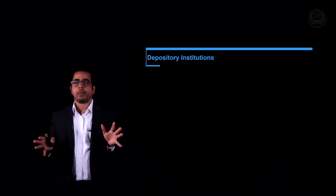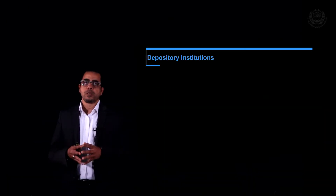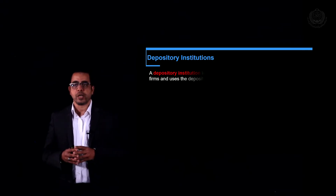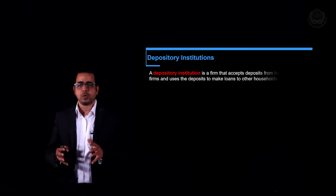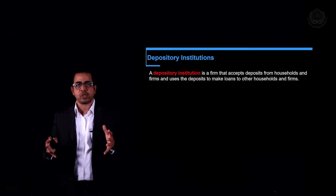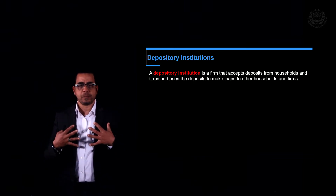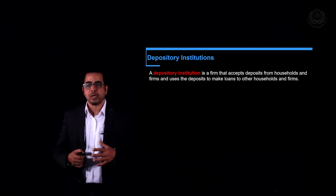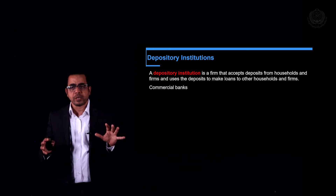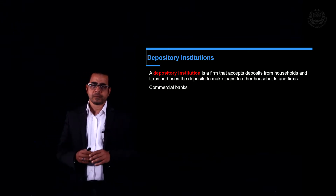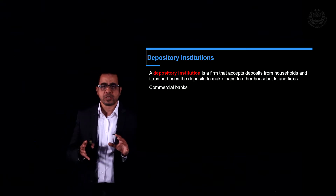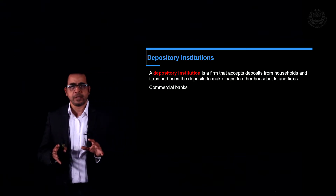In this unit we're going to talk about deposit institutions and their role in the economy — how do they contribute to money creation? What do we mean by deposit institutions? It's a firm that accepts deposits from households and businesses and makes loans. We're going to focus on commercial banks as they are the most well-known deposit institution in Egypt.